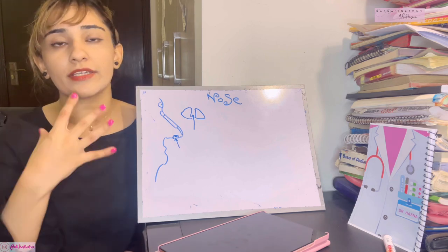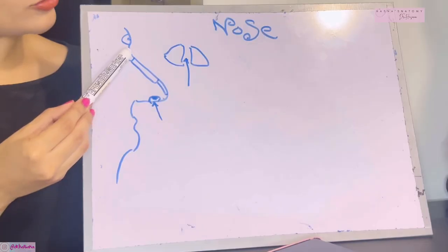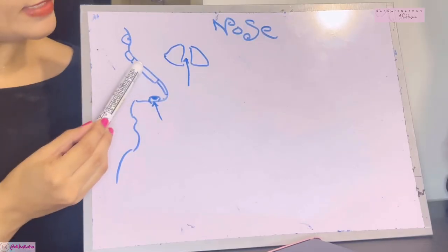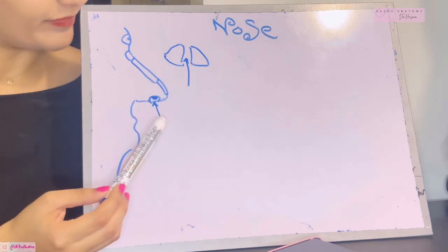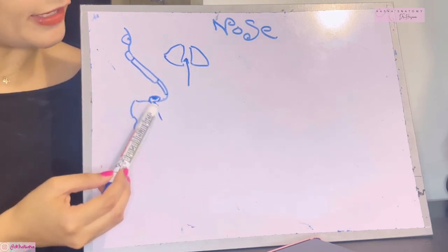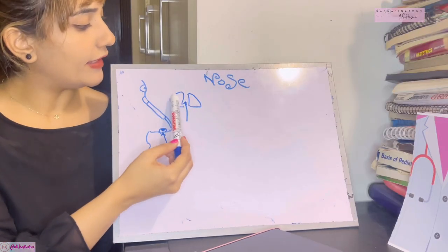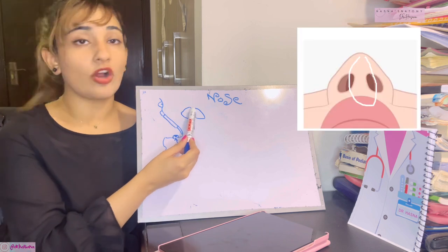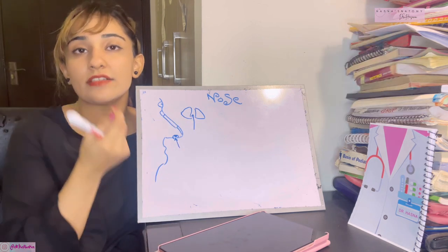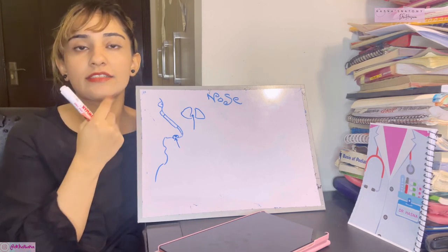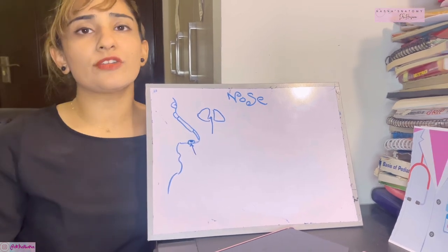The part of the nose that you can literally see is the external nose. It has a root from where it originates, then a dorsum which is the bridge of the nose, and an apex — the pointy part. After that it has the anterior nares where you can inhale air from. Between the nares is the columella area. You can also feel the nasal septum — the cartilage separating your nasal cavity into two.